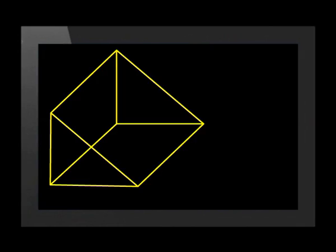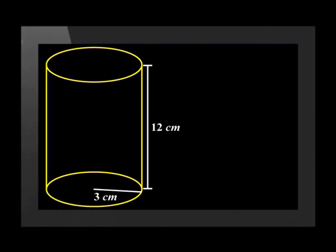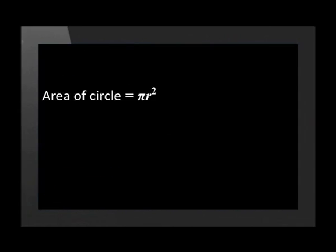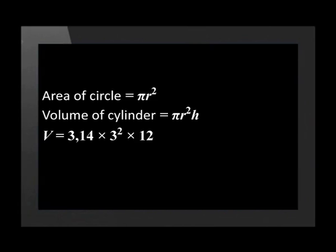This means that if you are calculating the volume of an object like this, you would first work out the area of the triangle and then multiply it by the height. Let's apply this method to a cylinder. The height of this can is twelve centimetres and the radius of the base is three centimetres. The area of a circle is pi r squared. This means that the formula for the volume of a cylinder is pi r squared times height. For pi we use the value 3.14. This means that volume is 3.14 times three squared times twelve. The volume of the cylinder is three hundred and thirty-nine point four cubic centimetres.